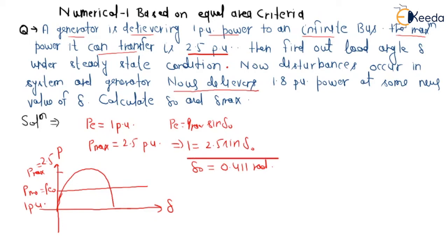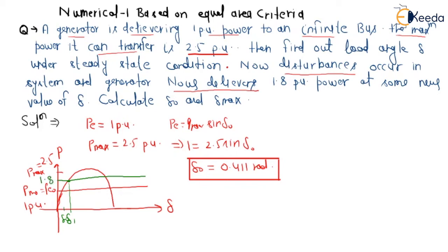Now, a disturbance occurs in the system and the generator now delivers 1.8 per unit power. In the P-delta diagram, if the previous operating point was at 1 pu, the new point is at 1.8 pu. So the generator is now operating at this new point in steady state, where this is delta_1 and the original was delta_0, with 1.8 per unit power being transferred.